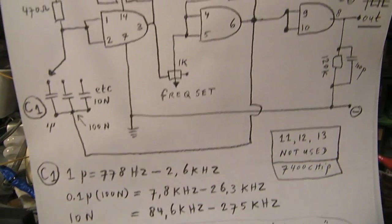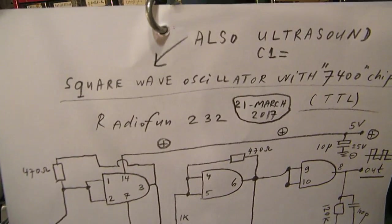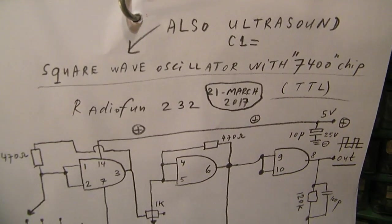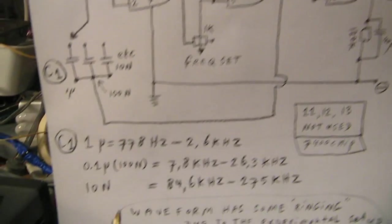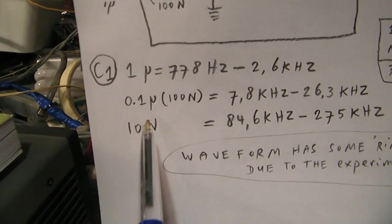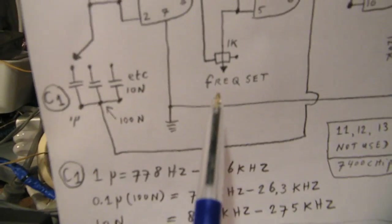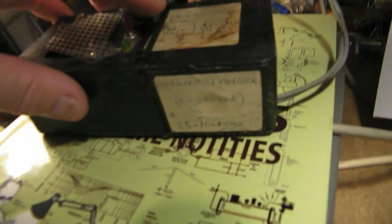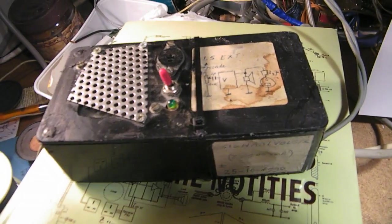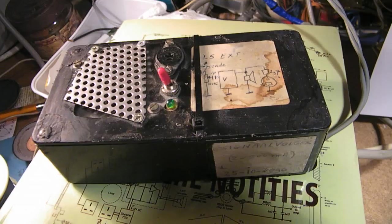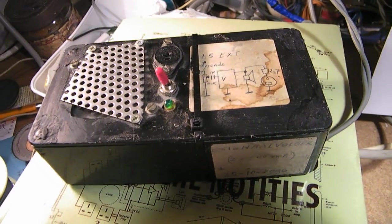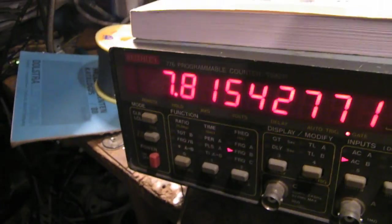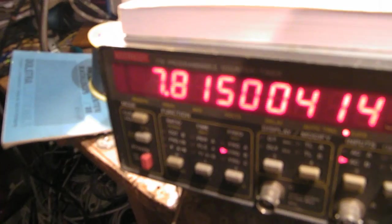The circuit is also useful because you can use it as an ultrasound generator with a capacitor from 100 nanofarad, and you can set the frequency here. Let's hear, I hope you can hear the beep now. This is the 100 nanofarad capacitor oscillating on 7.8 kilohertz.